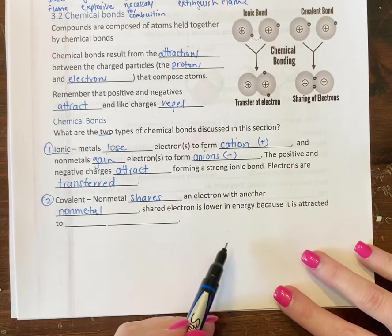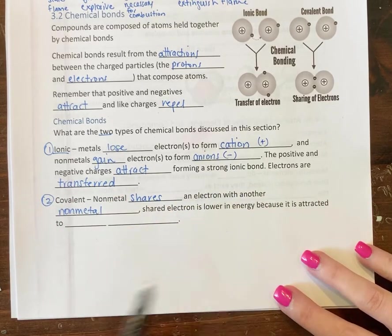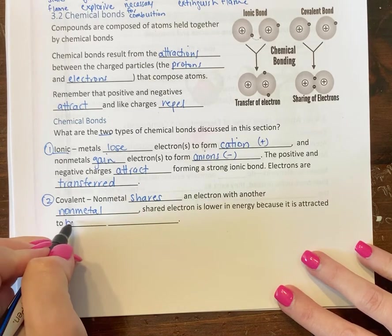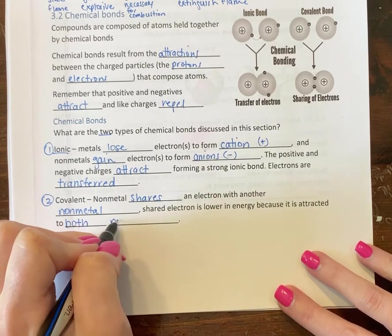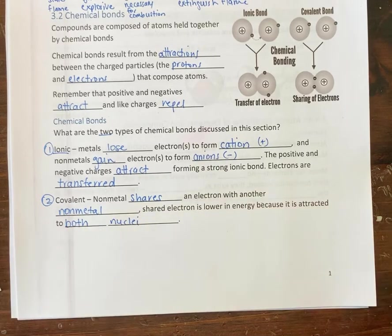So the shared electron is ultimately considered lower in energy because it's attracted to the protons in both of the nuclei in the atoms. So for my visual people, look at this.